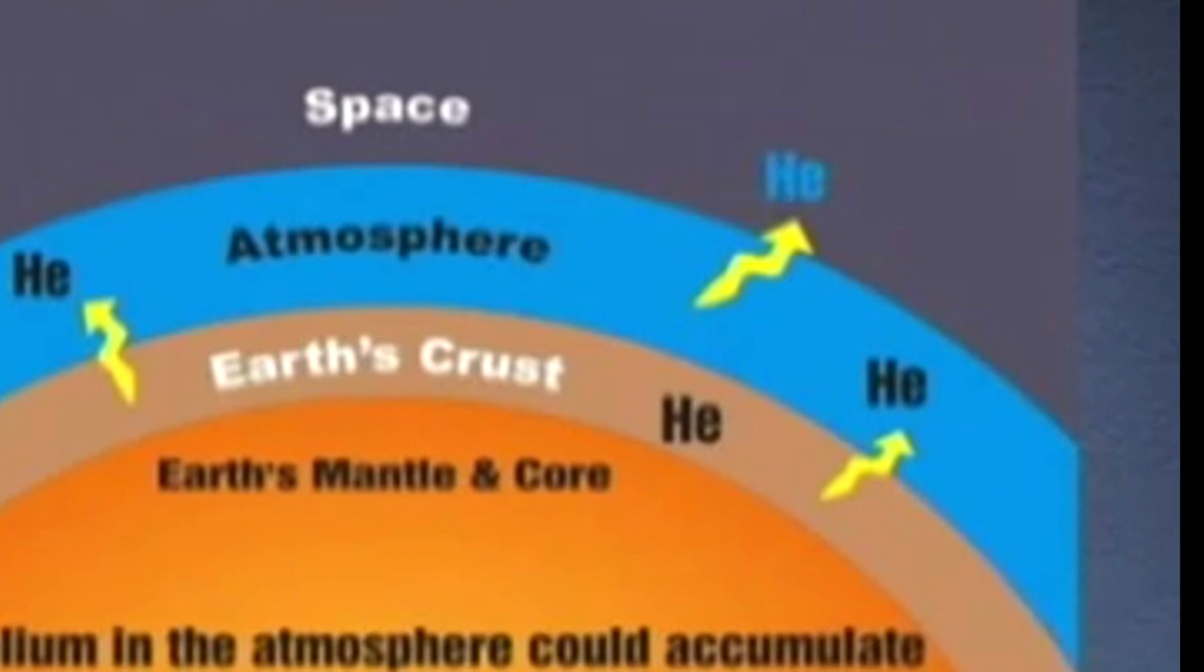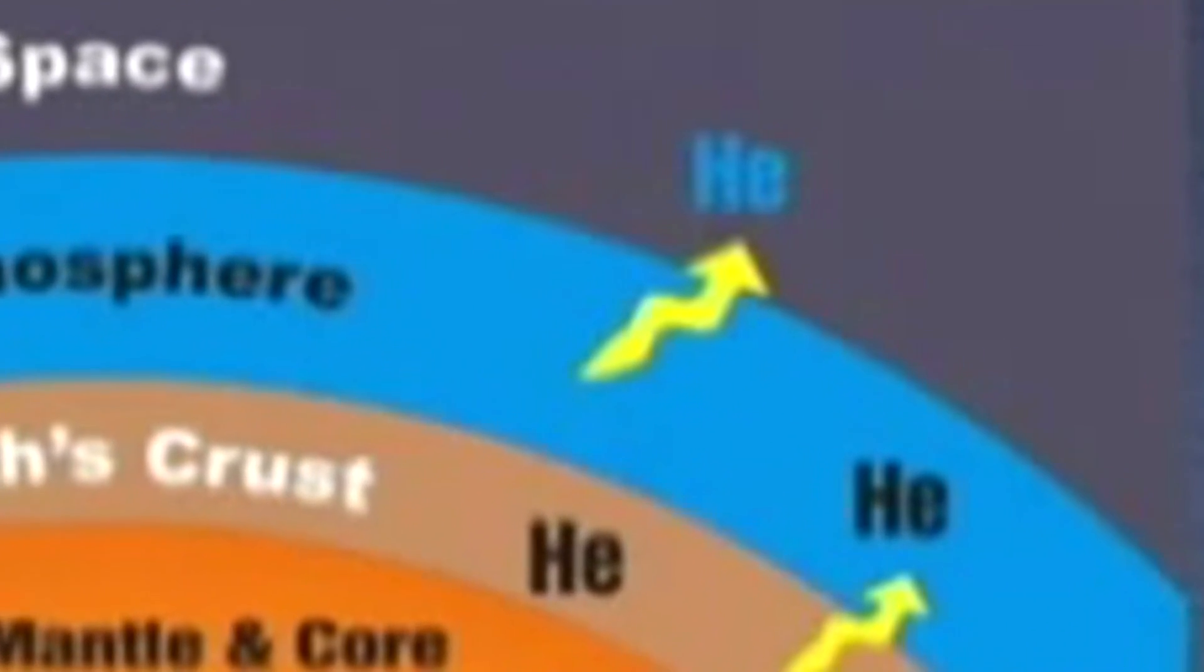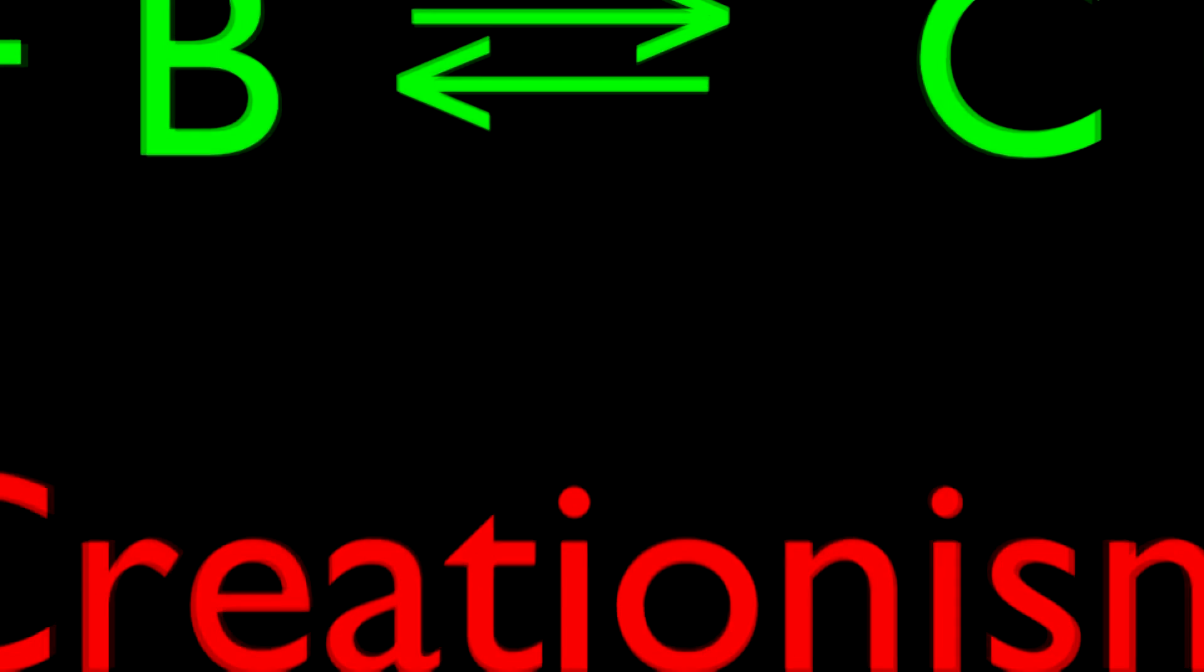This particular failure of creationist reasoning illustrates a general theme in creationist arguments. They will take some process in which a quantity is being created and destroyed at the same rate, pretend that it's only being created, calculate how long it would take to create the quantity and the amount that we have today.